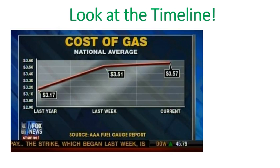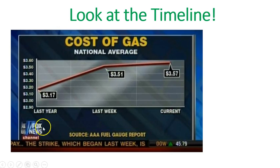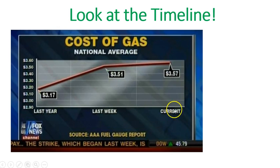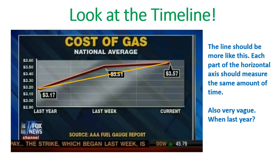Let's look at another offense. Notice this one does not start at zero either, but that's not the offense I'm looking at. I'm looking at the horizontal axis. Look at the timeline carefully: last year, last week, and current. So this goes from a year ago to a week ago to our current. If we draw this more accurately, a year ago, a week ago, current — that's about how it should be.